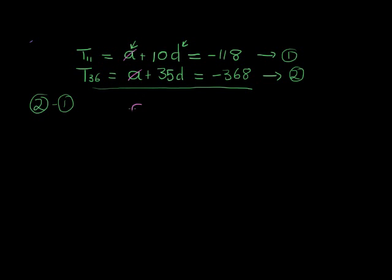So a minus a is just zero. And now I'm just left with one variable. 35 minus 10 gives me 25 d's is equal to, what is this? Negative 368. 8 minus 8 is 0. 6 minus 1 is 5. Negative 3 minus 1 is 2. Okay, so negative 250.